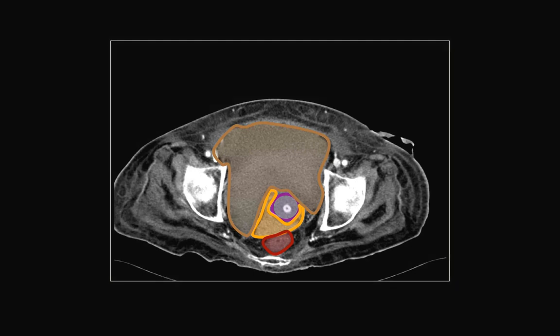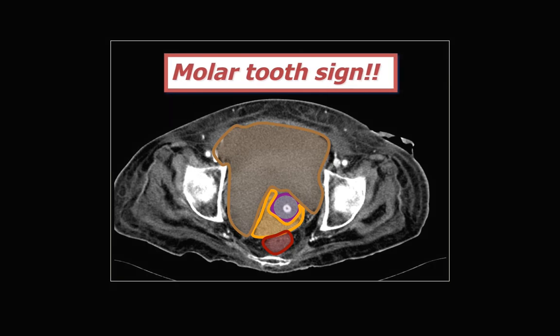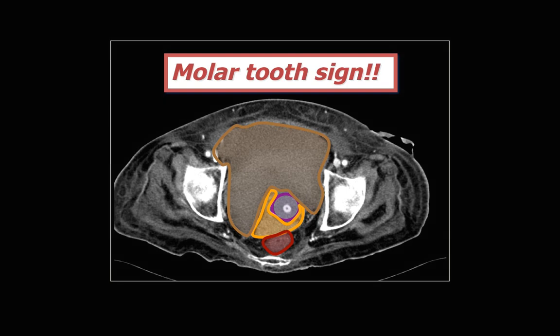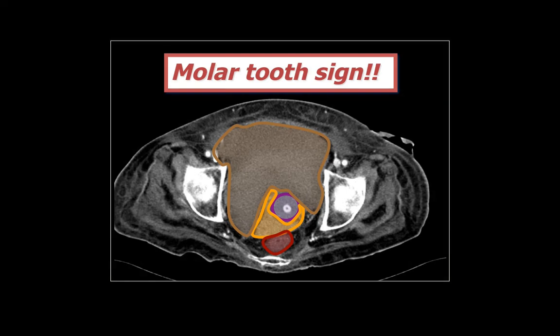And notice the shape of this collection that fits a molar tooth appearance. This is what's known as the molar tooth sign, which is a sign of extraperitoneal pelvic fluid within the pre-vesicle space.